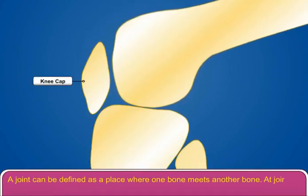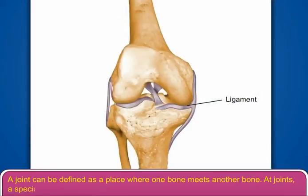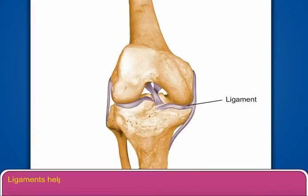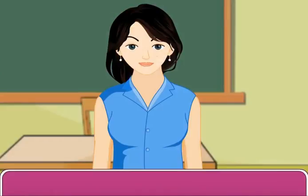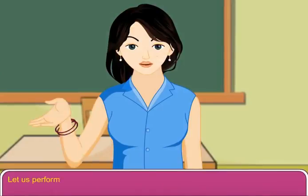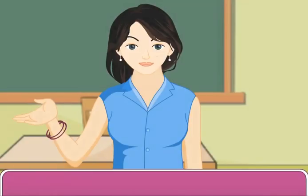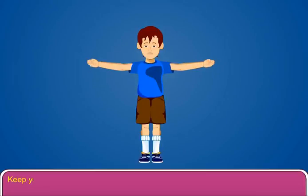A joint can be defined as a place where one bone meets another bone. At joints, a special type of connective tissue called a ligament is present. Ligaments help to attach one bone with another bone.